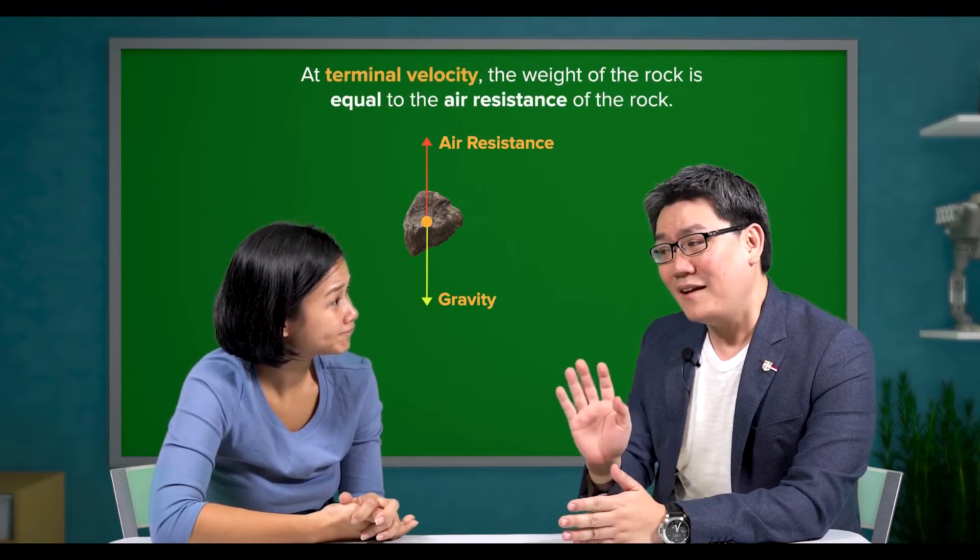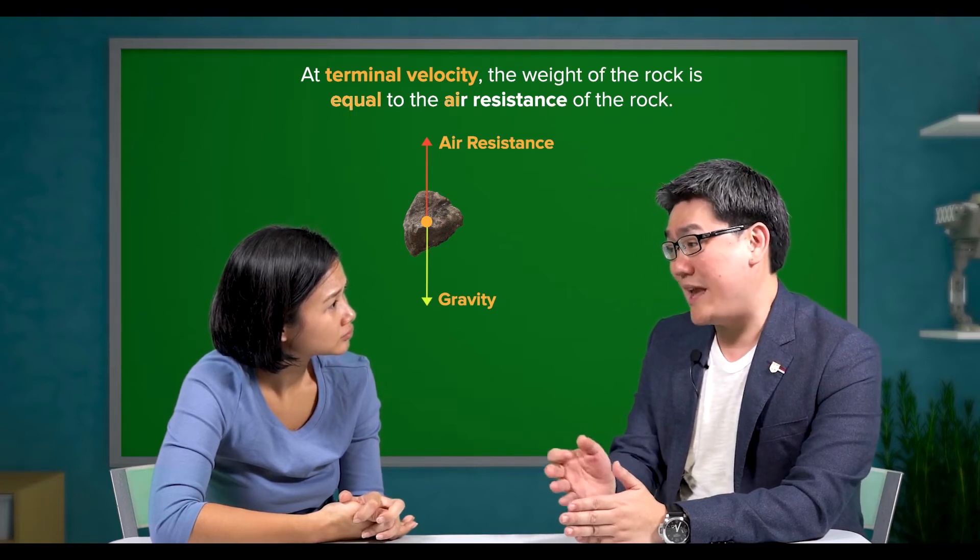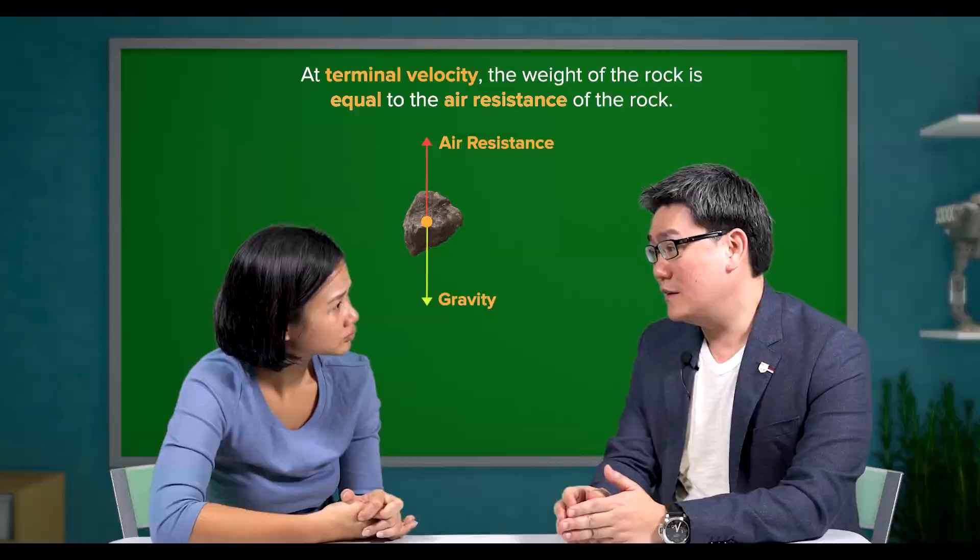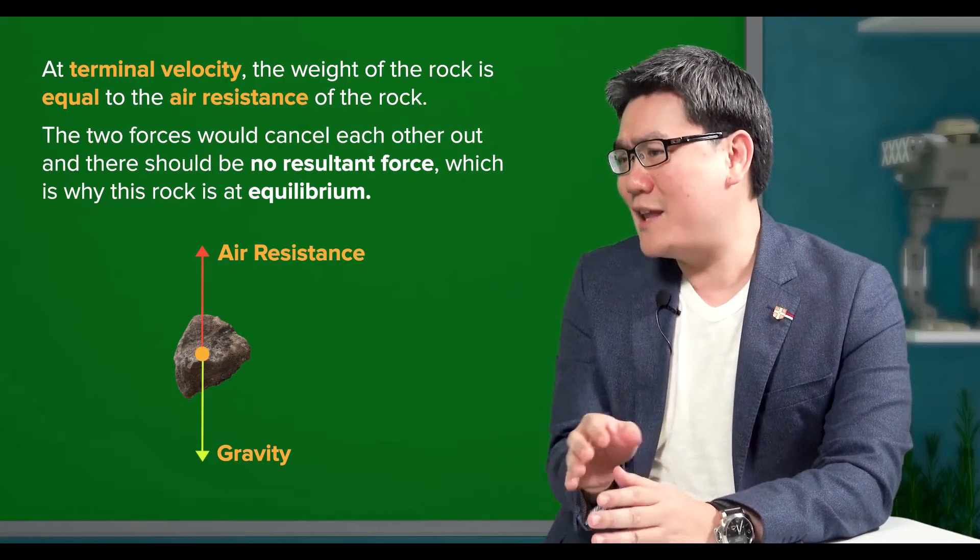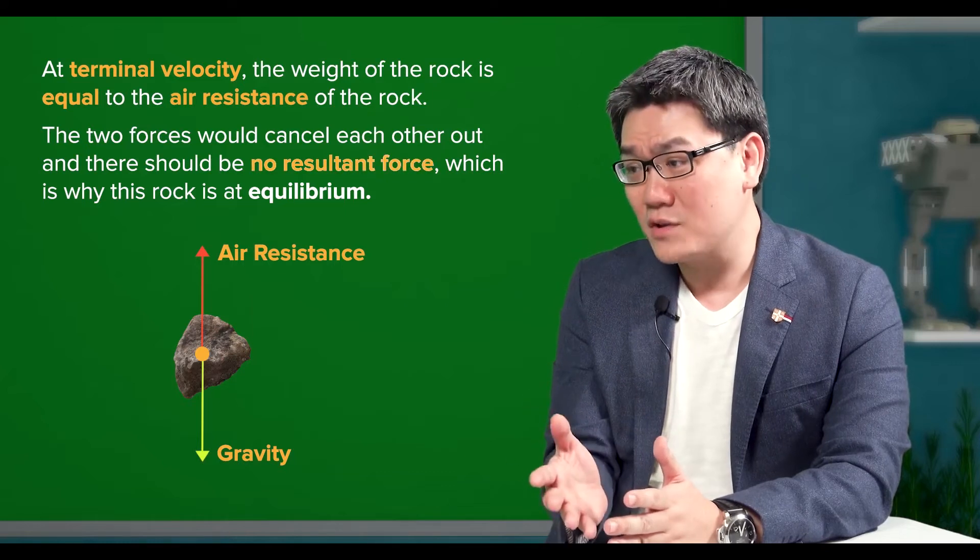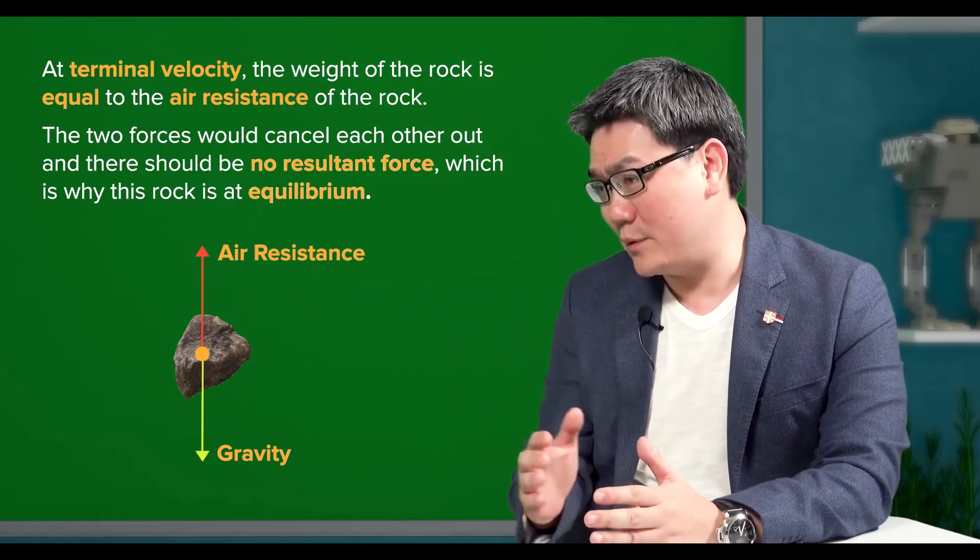I see. At terminal velocity, the weight of the rock is equal to the air resistance of the rock. The two forces would cancel each other out and there should be no resultant force, which is why this rock is at equilibrium.